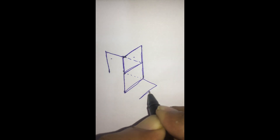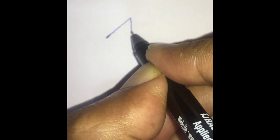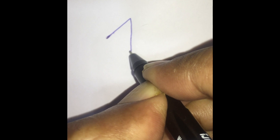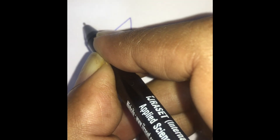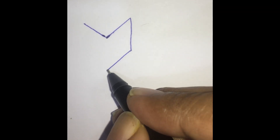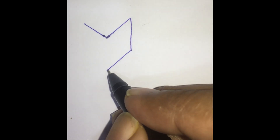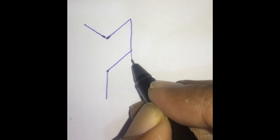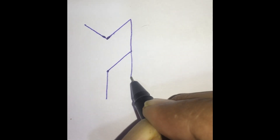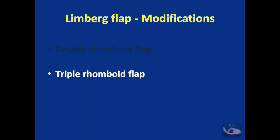This is called the double rhomboid flap, and the suture line of this double rhomboid flap can be marked as we have learned. That is, the side adjacent to the flap is not included. The other three sides are marked and the leading edge of the flap is also marked.